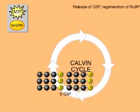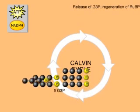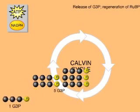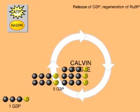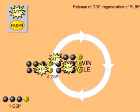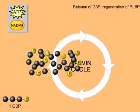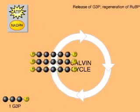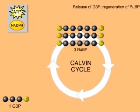One of the G3P molecules represents the three carbon dioxide molecules fixed so far. The other five G3Ps are reshuffled to regenerate the original RuBP molecules. To summarize, the Calvin cycle has used the energy of the light reactions to reduce three molecules of carbon dioxide and produce one molecule of G3P.